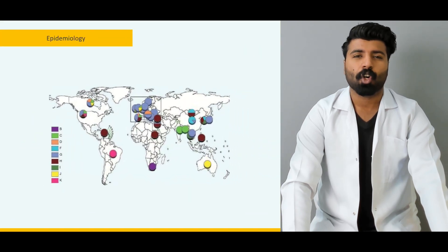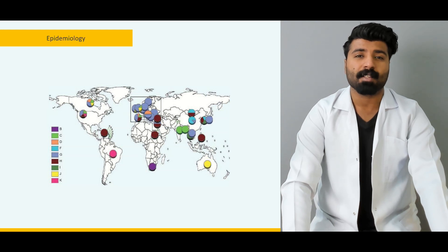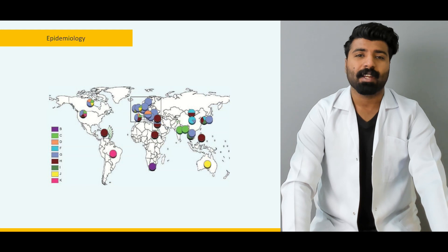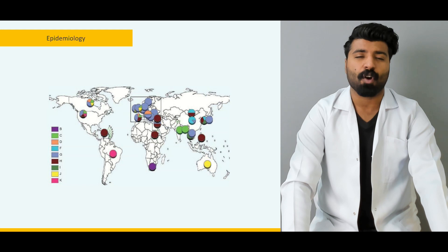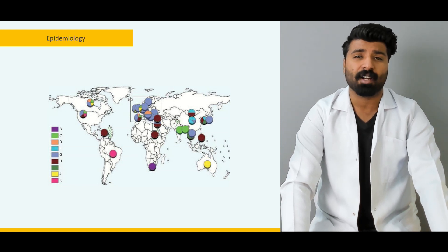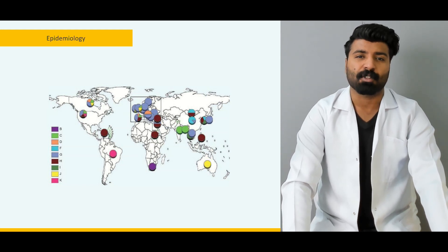Then we're going to talk about the epidemiology of this pathology — what areas were affected the most, what areas had these epidemics and endemics before the invention of vaccines, and what areas are still struggling with this pathology.